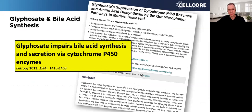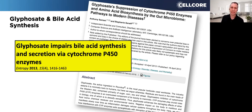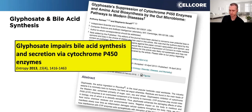Glyphosate is sprayed all over the place — it's in rainwater, it's in newborn babies. The CDC, about three weeks ago, released a study looking at almost 3,000 individuals — about 80% of them had glyphosate in their urine. This paper from 2013 showed that glyphosate impairs bile acid synthesis and secretion, basically shutting down phase one. So glyphosate not only slows phase one down, but it also slows the excretion down too.